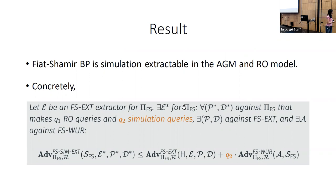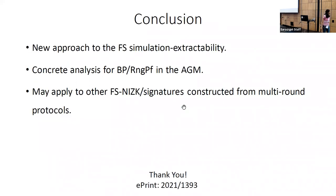We proved that Fiat-Shamir bulletproofs is simulation extractable in the AGM random oracle model, and we show the relation between the advantage of different adversaries considered, where Q2 is the number of simulation queries the adversary makes. To conclude, we have a new approach to show non-interactive protocols are simulation extractable, we give a concrete analysis for bulletproofs and range proofs, and this may be applicable to other multi-round constructions.